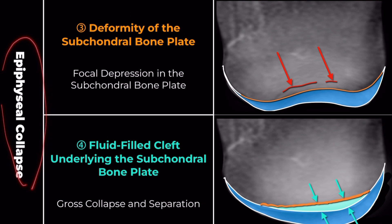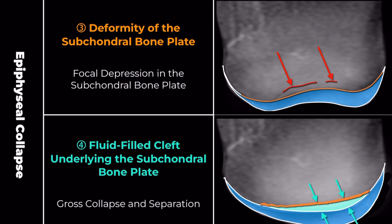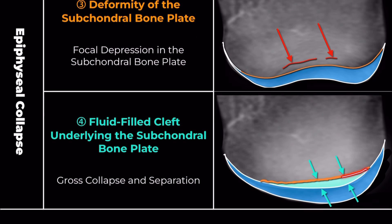In cases where epiphyseal collapse is present, there is a noticeable deformity resulting in a focal depression in the subchondral bone plate — a more advanced sign indicating the structural integrity of the bone is compromised. A fluid-filled cleft underlying the subchondral bone plate may also be seen, indicating gross collapse and separation.